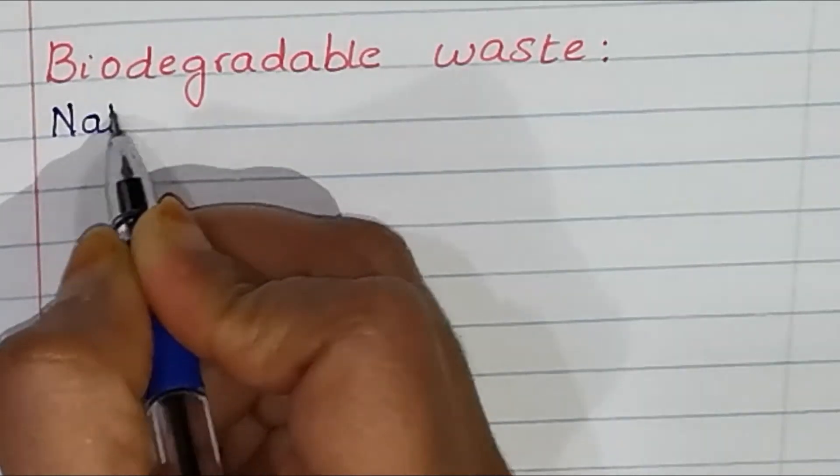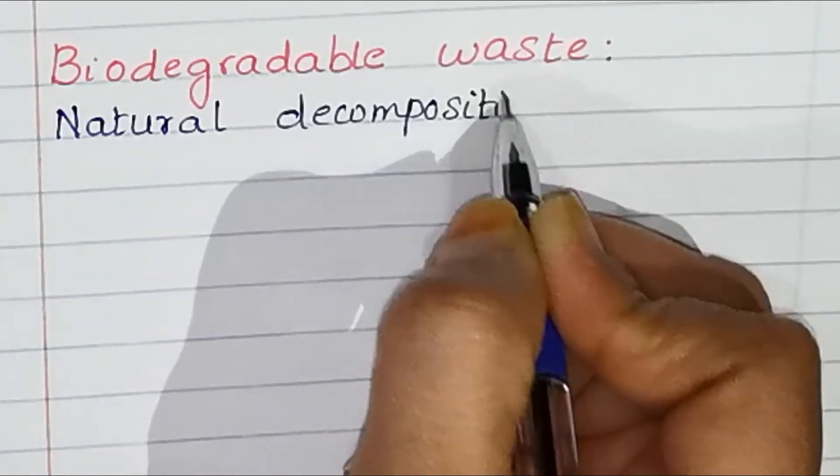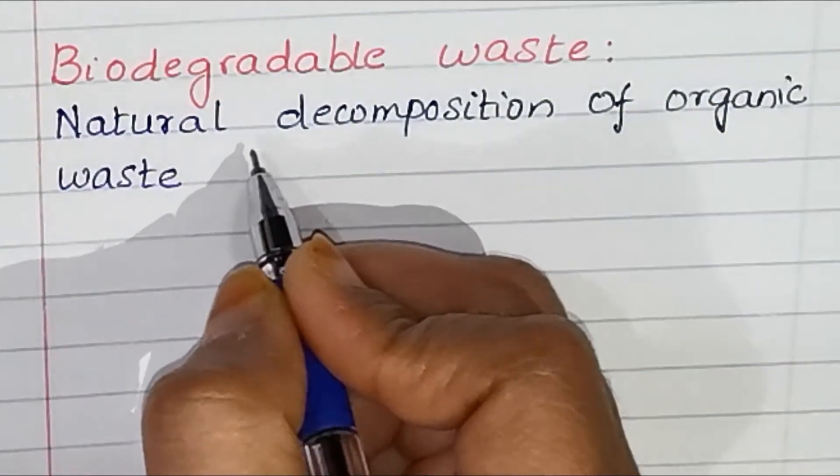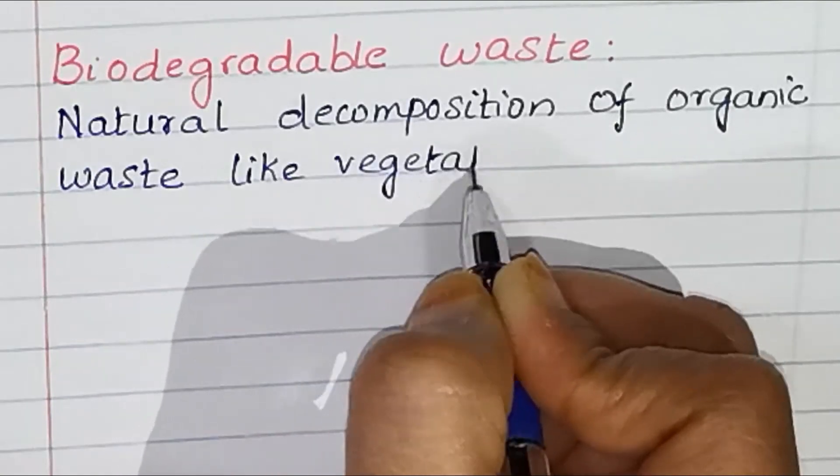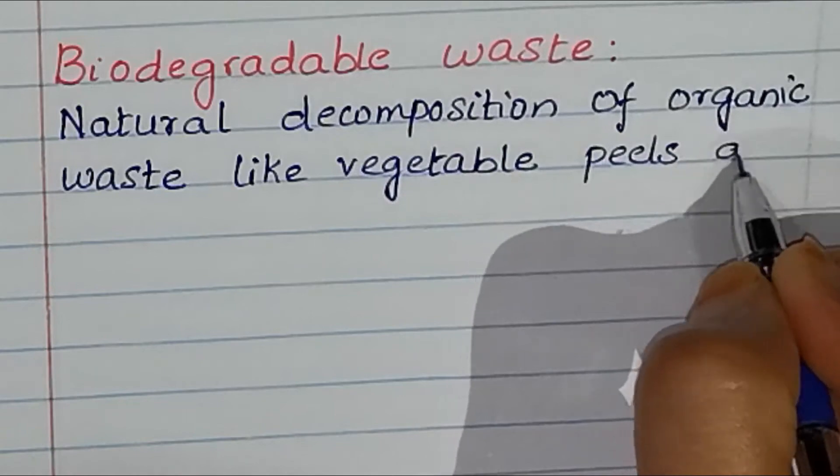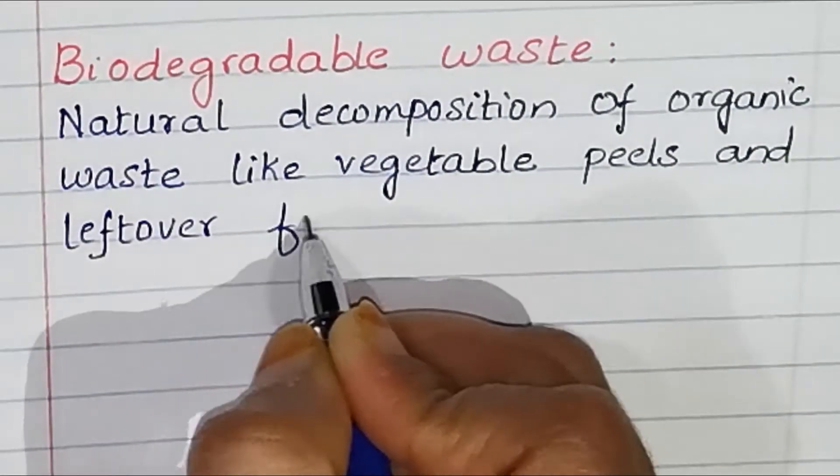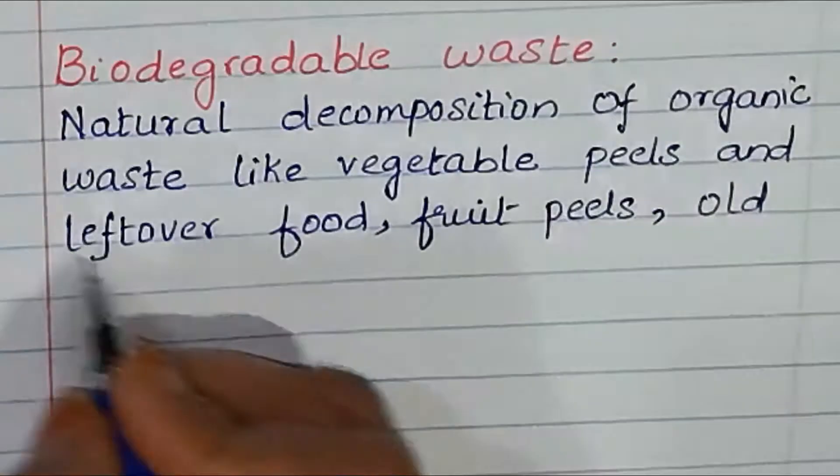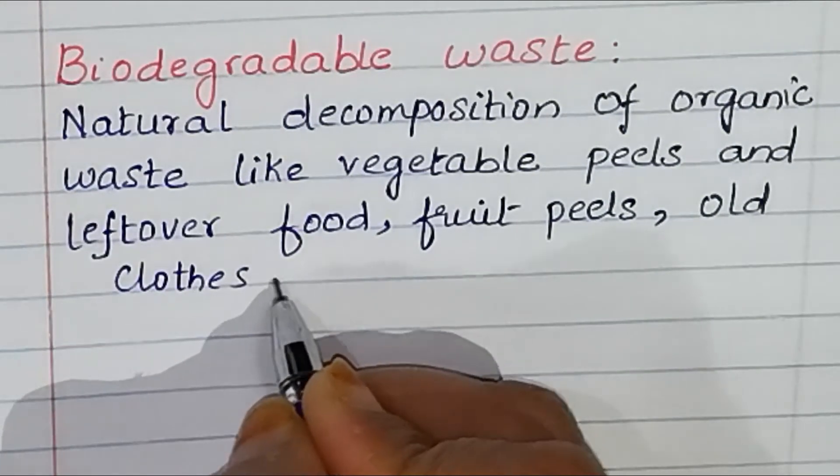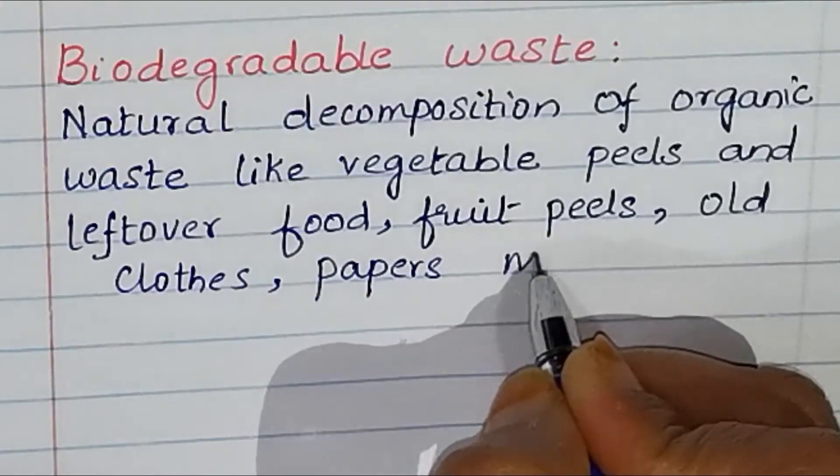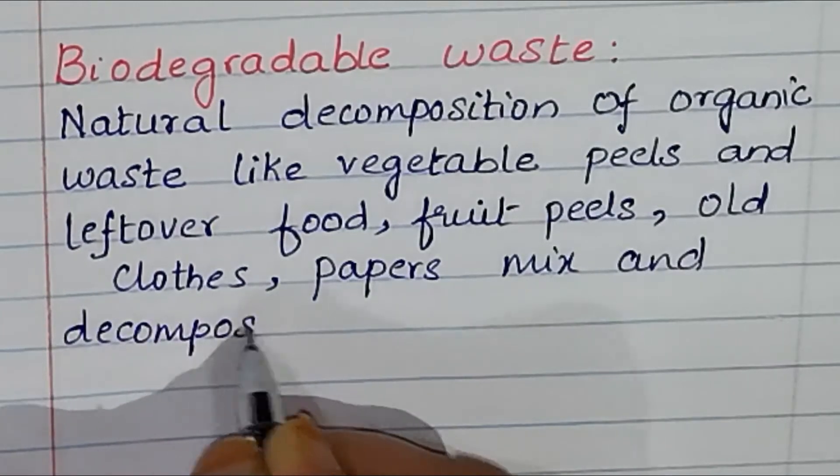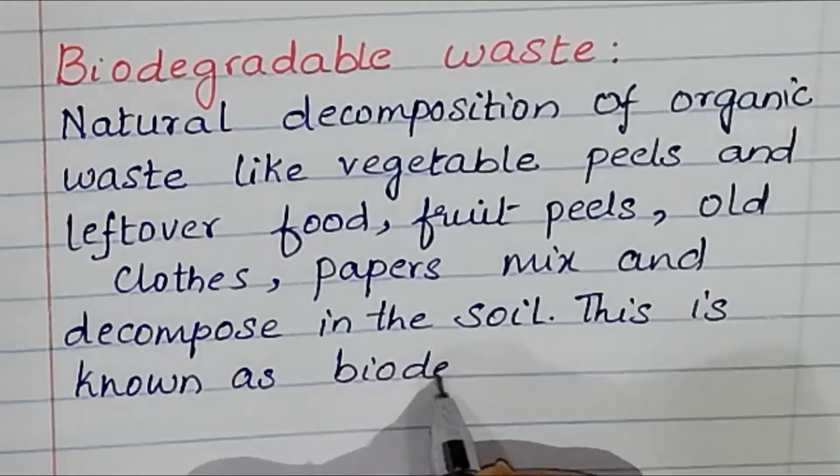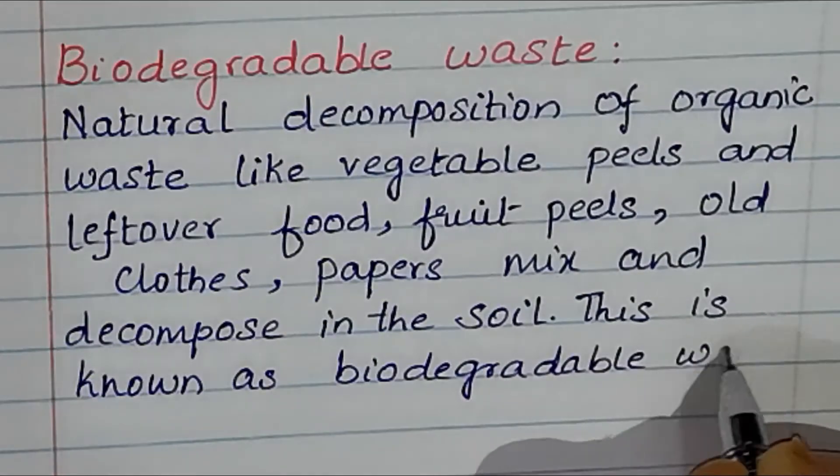Now let's learn about biodegradable waste. Natural decomposition of organic waste like vegetable peels and leftover fruit peels, old cloths, papers, mix and decompose in the soil. This is known as biodegradable waste.